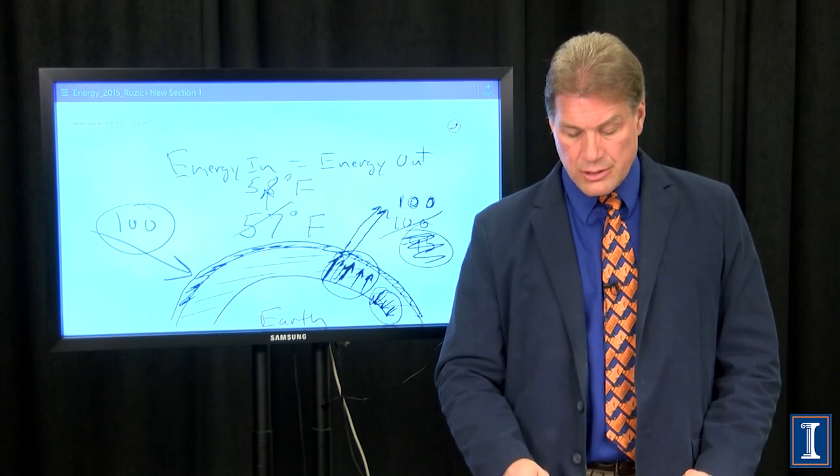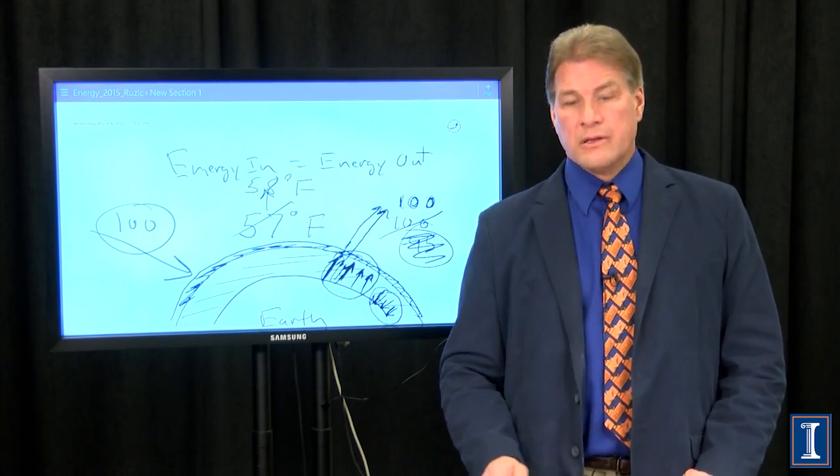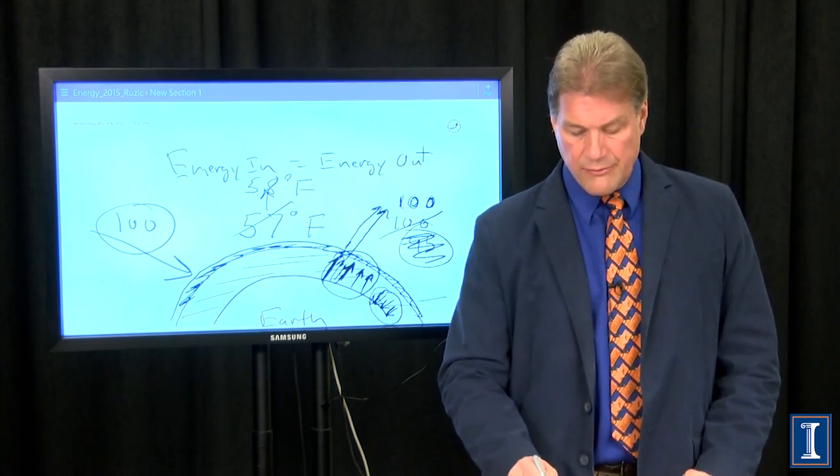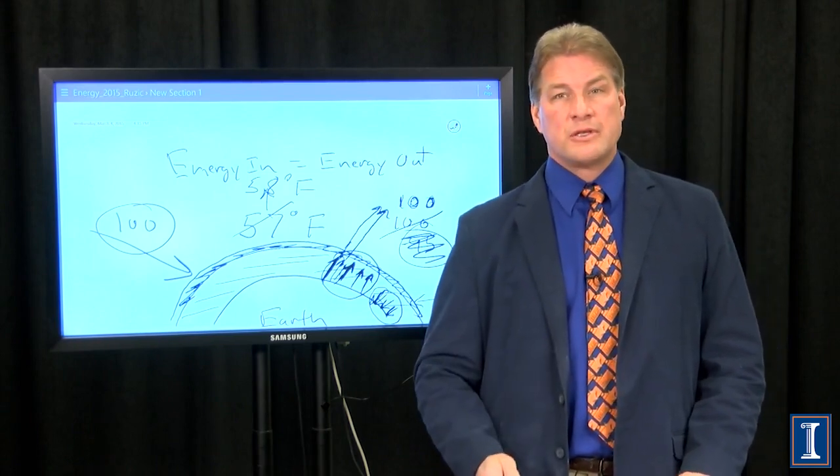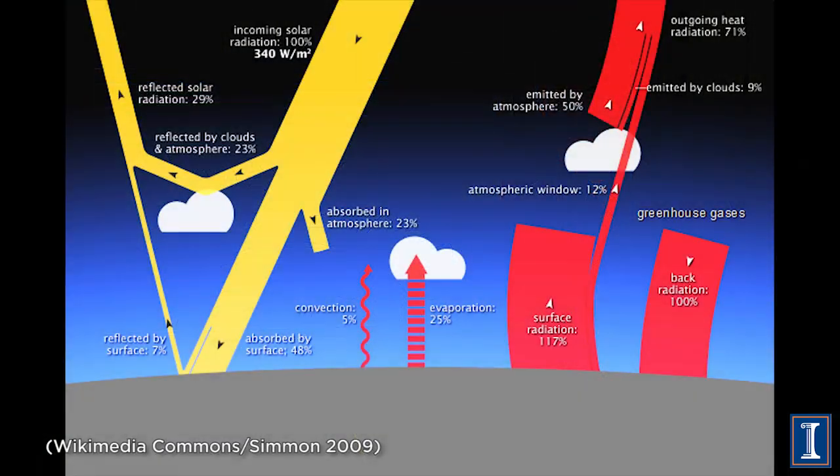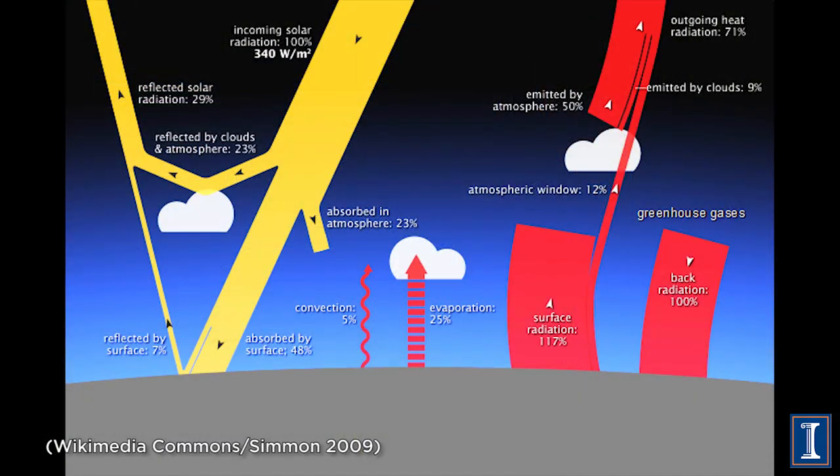This addition, this addition of changing this balance is what recently has been caused by mankind. If you look at the actual numbers of what comes in and reflects, it's a little more complicated than the drawing that I made.